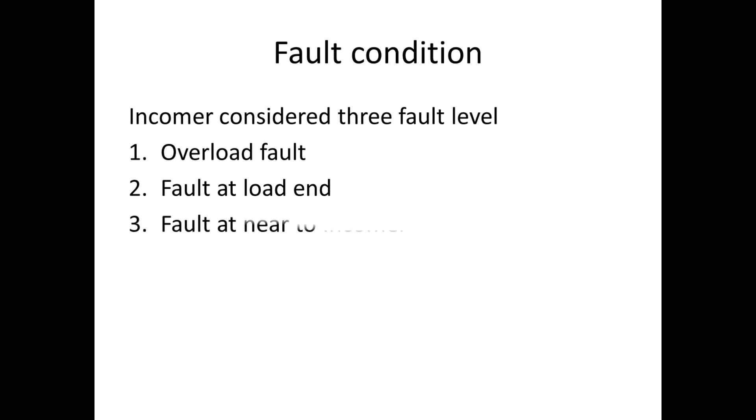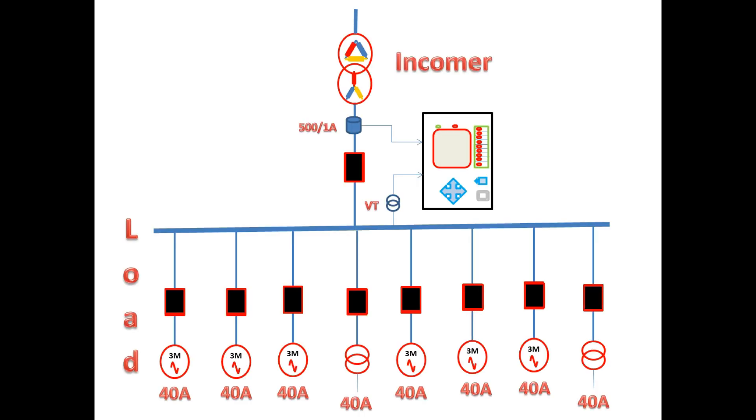First we will see the fault at overload condition. Now the full load current in this feeder is 320A. According to the CT ratio, the secondary current is 0.64A. So I am going to keep overcurrent low stage pickup on 0.68A and trip time is 5 seconds.